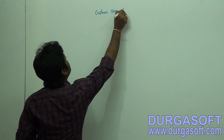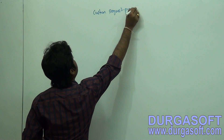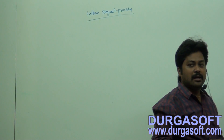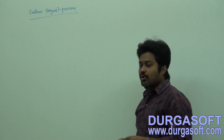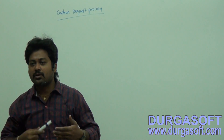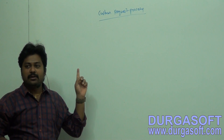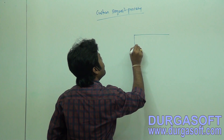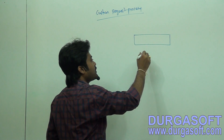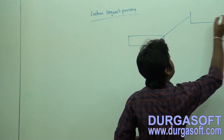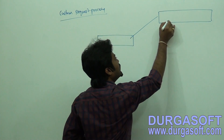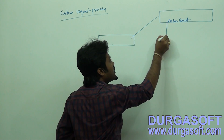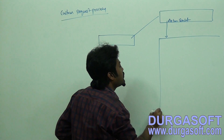We know about the RequestToProcessor class. RequestToProcessor class is a helper class for the ActionServlet class. It will process actual validations and controller operations. Whenever you submit a request, the input request will always go to ActionServlet first, and then ActionServlet will send the same request to the RequestToProcessor class.